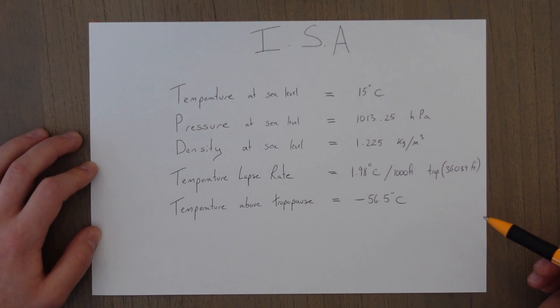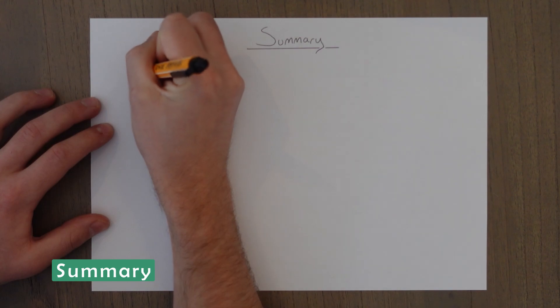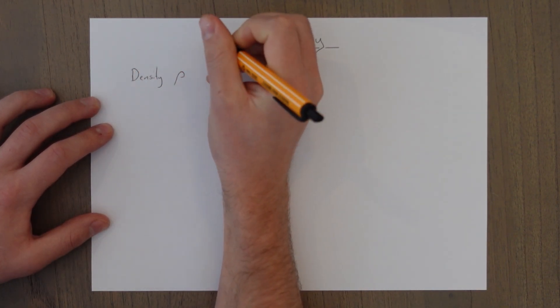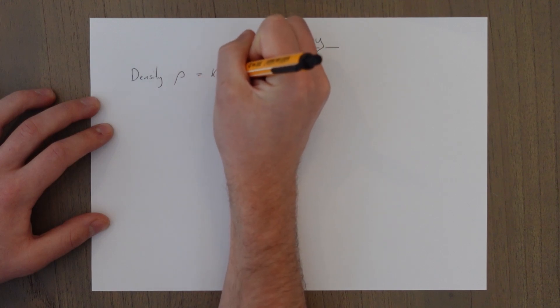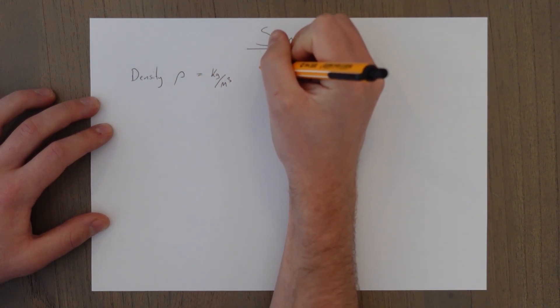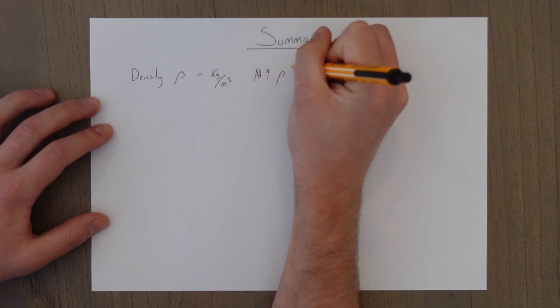So in summary, we have density is given the symbol rho. It is kilograms per meter cubed. And as the altitude increases, the density goes down.